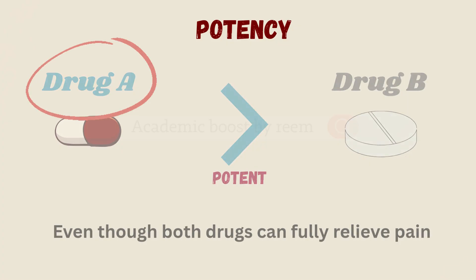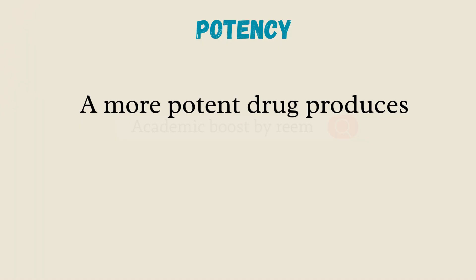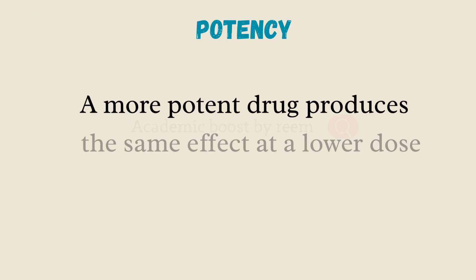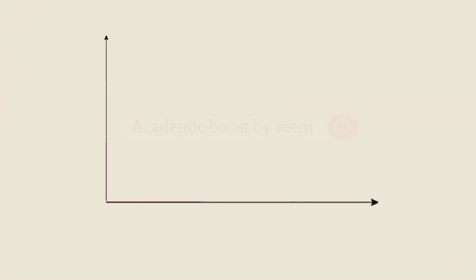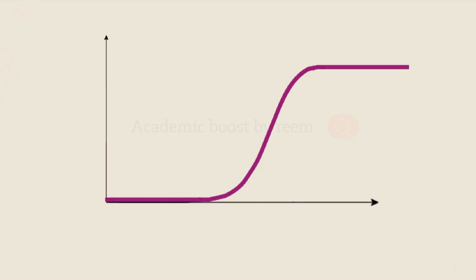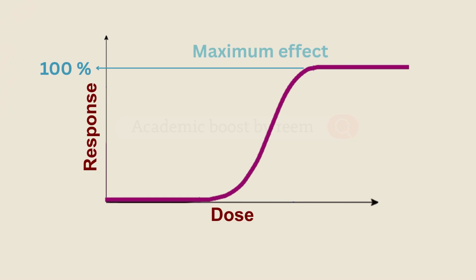We conclude that a more potent drug produces the same effect at a lower dose than a less potent one. Now let's look at the dose-response curve. At the very top we see the maximum effect a drug can achieve.